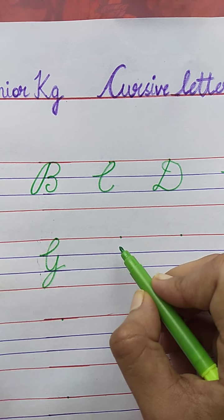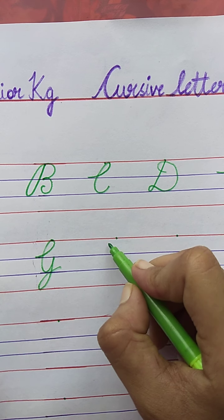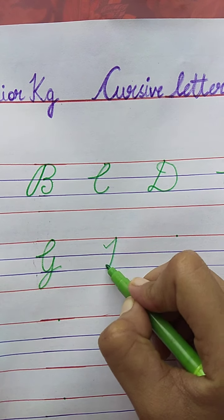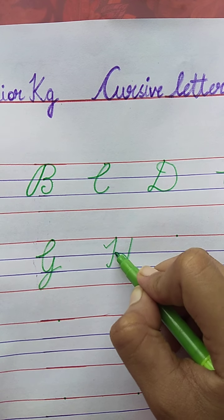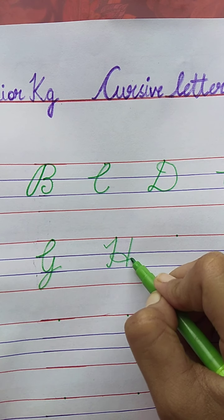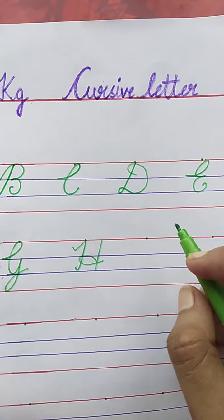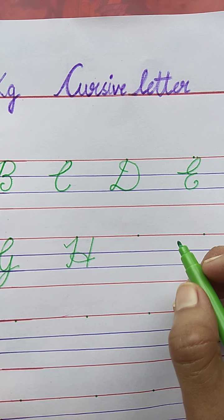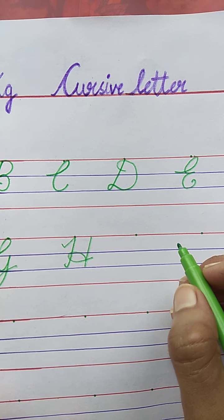Now, tell me the next letter. H. Very good. H for House. See here. Speak with me. The spelling of House is H-O-U-S-E. House.